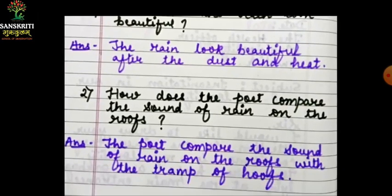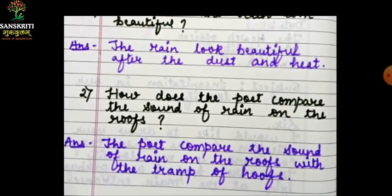Next question: how does the poet compare the sound of rain on the roofs? Poet ne kis se compare kiya hai? Rain roofs pe joh sound aati hai, joh aawaz aati hai, usko kis se compare kiya hai? The poet compares the sound of the rain on the roofs with the tramp of hoofs. Ghode ke jo khur hote hai, jo pair bhi hote hai, joh aawaz karte hai, us jaisi sound aati hai na — usse compare kiya gaya hai.